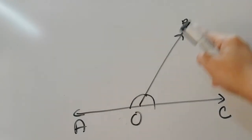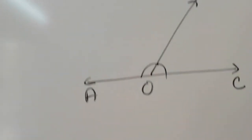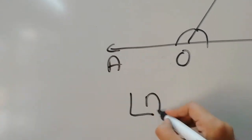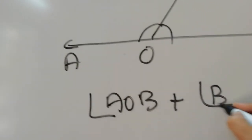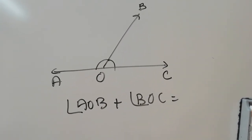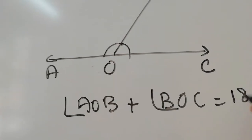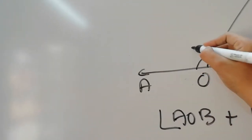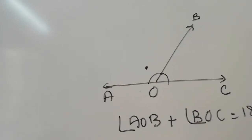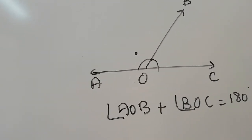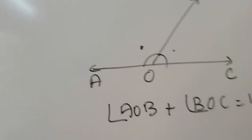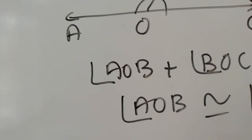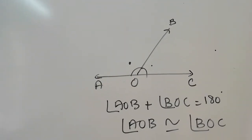Angle AOB and angle BOC are called linear angles because they are on a straight line. Since they are on a straight line, the total of angle AOB plus angle BOC is equal to 180 degrees. The adjacent angle to angle AOB is angle BOC.